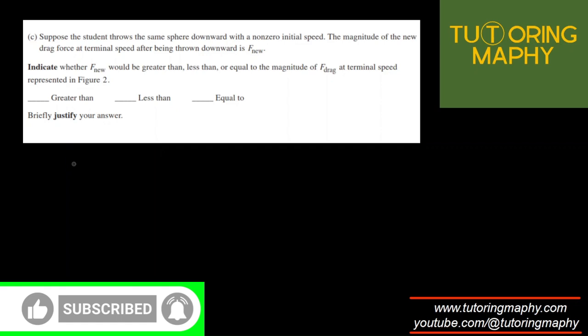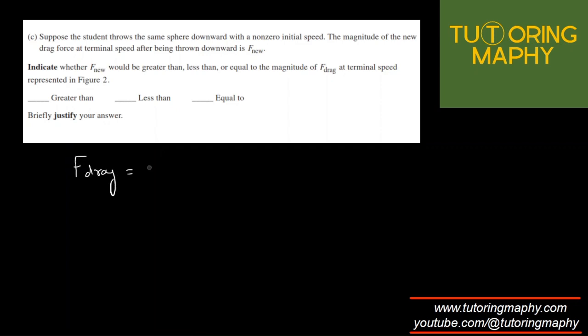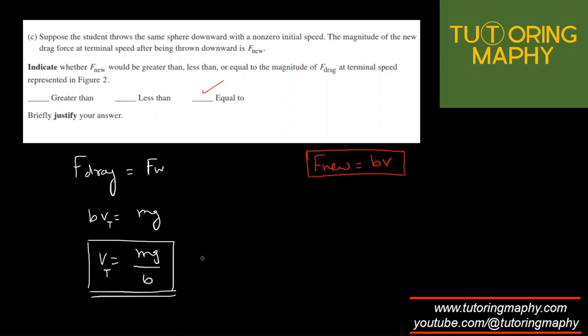So what is the formula for the F_drag? At the terminal point, F_drag is equal to F_weight, right? So we know that BV is equal to MG. So V is MG over B. Now it doesn't matter whether we throw it down with some speed or release it from rest. The terminal speed will still be same because the mass is not changing. B is a constant, G is a constant. So the terminal speed is still the same. Obviously, it will make sense that F_nu, which is only dependent on V, is also same. So they should be equal. There is no change whatsoever.